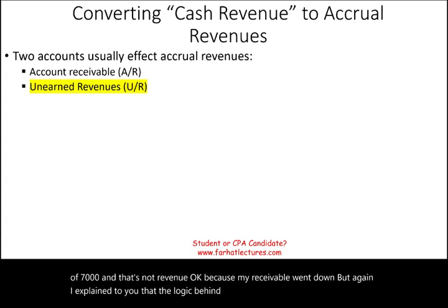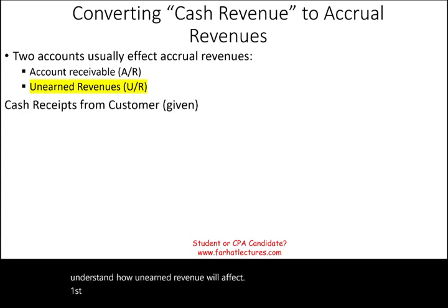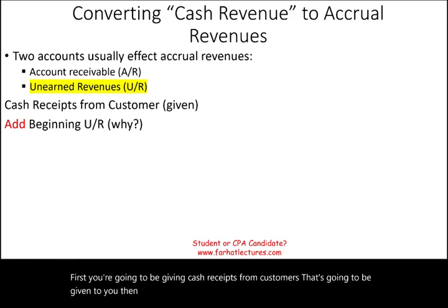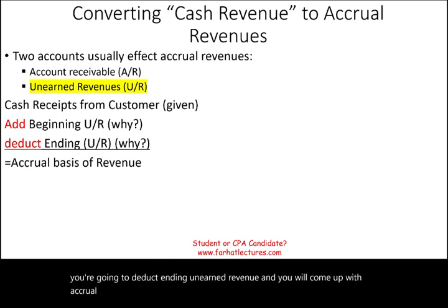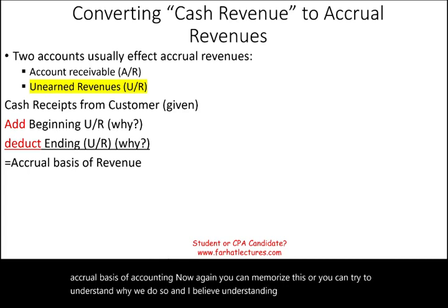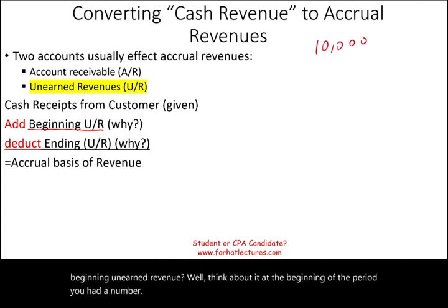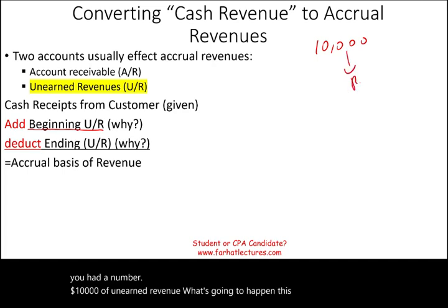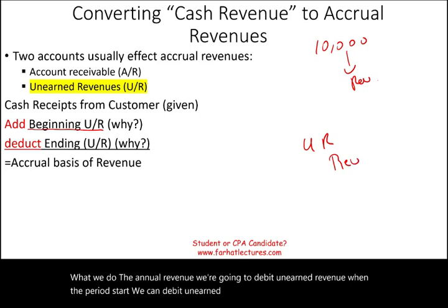The second account that affects revenue is unearned revenue, which is a liability. You'll be given cash receipts from customers, then you add beginning unearned revenue, then deduct ending unearned revenue, and you come up with accrual basis revenue. Why do we add beginning unearned revenue? At the beginning of the period, say you had $10,000 of unearned revenue. This period, that unearned revenue turns into revenue — we debit unearned revenue and credit revenue. Therefore, we add beginning unearned revenue to arrive at revenue.